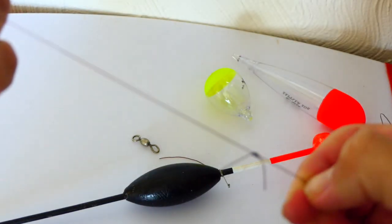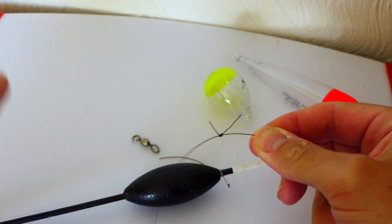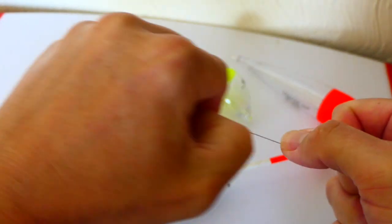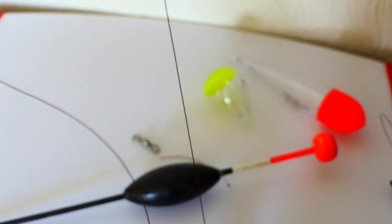And that's going to trap the bead. It's going to prevent the float from going right the way through, you see, because that's trapping at the bead.